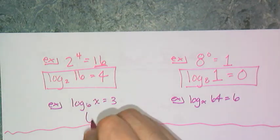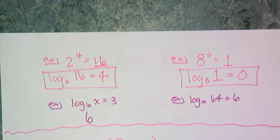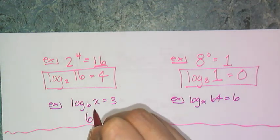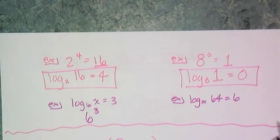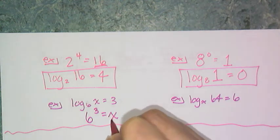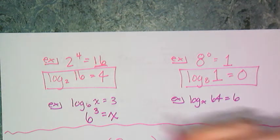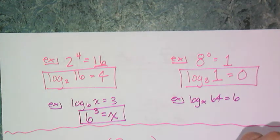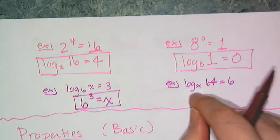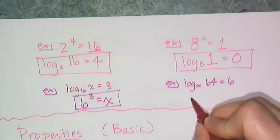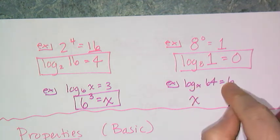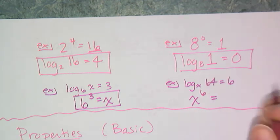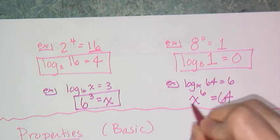So that subscript is the base of the exponent. And remember the whole job of the logarithm is to spit out the exponent. And so that exponent is 3, and the result is x. Now I'm not asking you to solve for x here, I'm just asking you to rewrite it. Similar thing here, x is my base, the logarithm spits out the exponent, so it's x to the sixth power, and the result is 64.